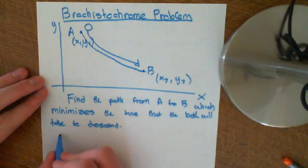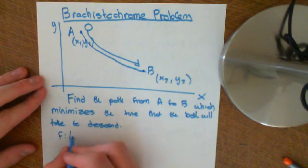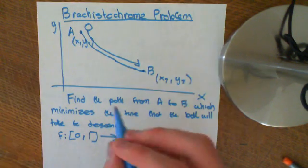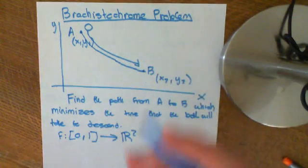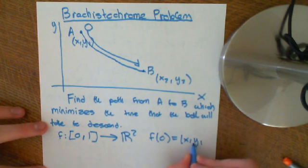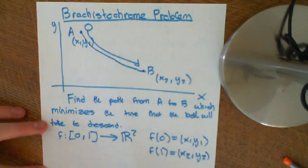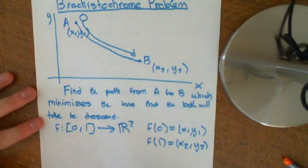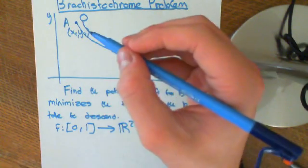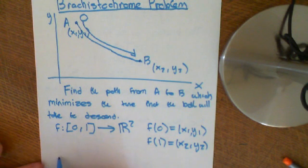Again, we have a function which maps, let's parametrize this path from A to B. We'll parametrize it in terms of the interval 0 to 1, which is going to map us into R2. So it's going to take each point of this interval and map it onto a point in R2, and that will be the path. Of course, we should take 0 to the point x1, y1, and we should take 1 to the point x2, y2. So those are our boundary conditions.